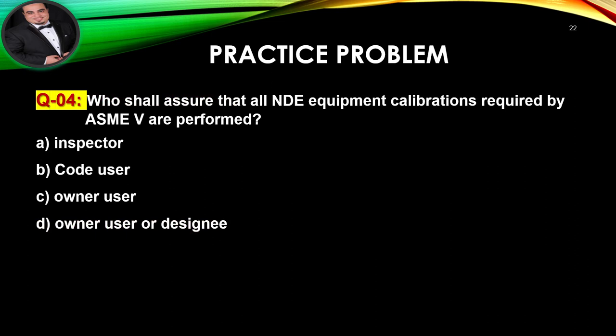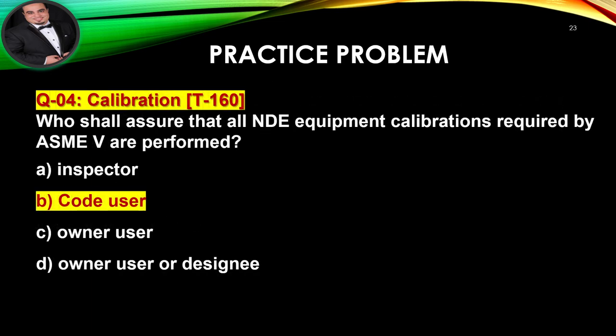Question number four: Who shall assure that all NDE equipment calibrations required by ASME Section 5 are performed? A. Inspector. B. Code user. C. Owner/user. D. Owner/user or designee. The best answer for question number four is per item T-160 — it is B, the code user.